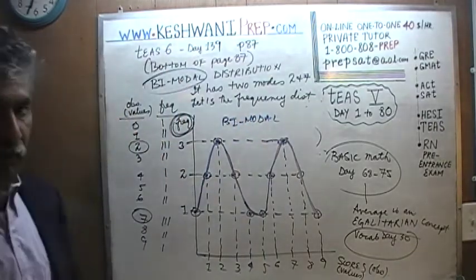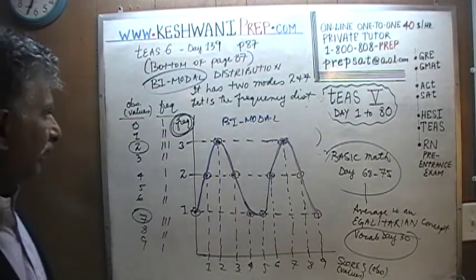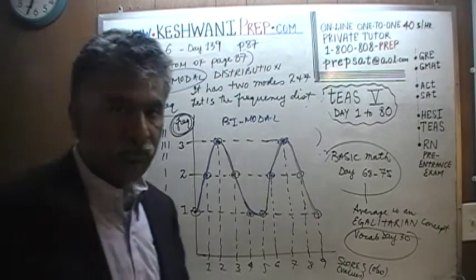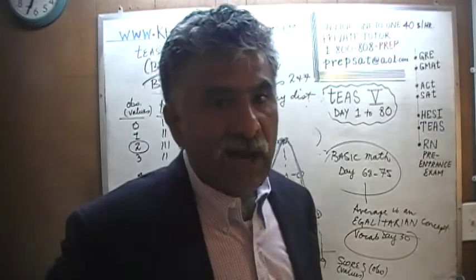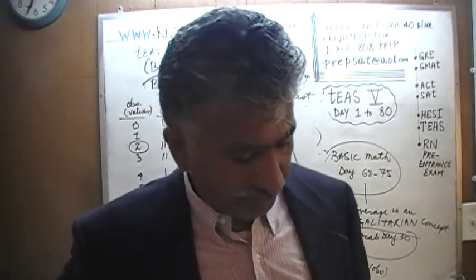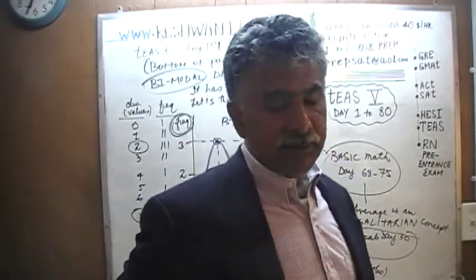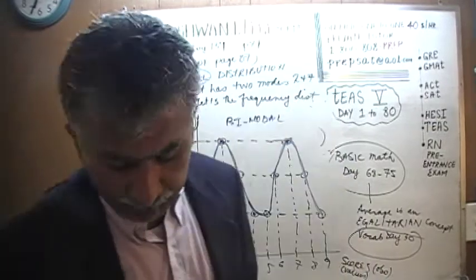Since we plot the frequency distribution and see two peaks at the same height — meaning these two values appear an equal number of times — we do not have a single mode, we have modes. This distribution is bimodal. The modes are 2 and 7.